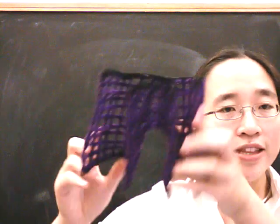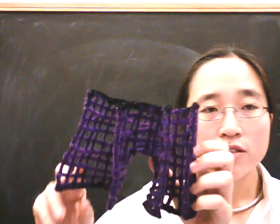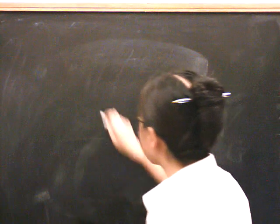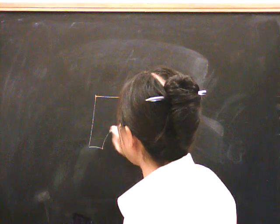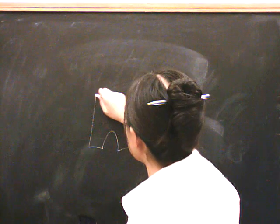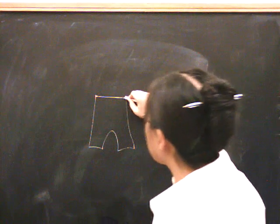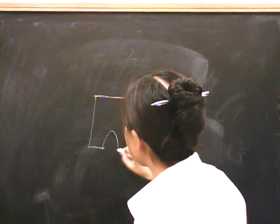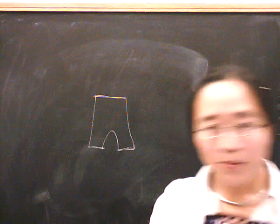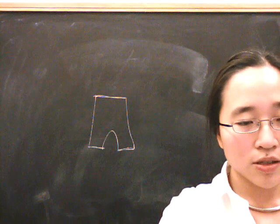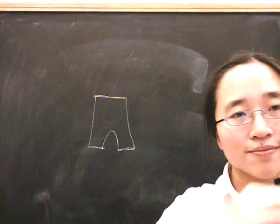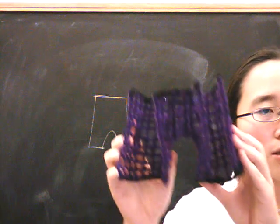And in fact, this is somehow equivalent to the flat pair of pants that just looks like this. Where this is the top boundary and this is the bottom boundary. Because you can sort of imagine pulling it flat. So, there you go.